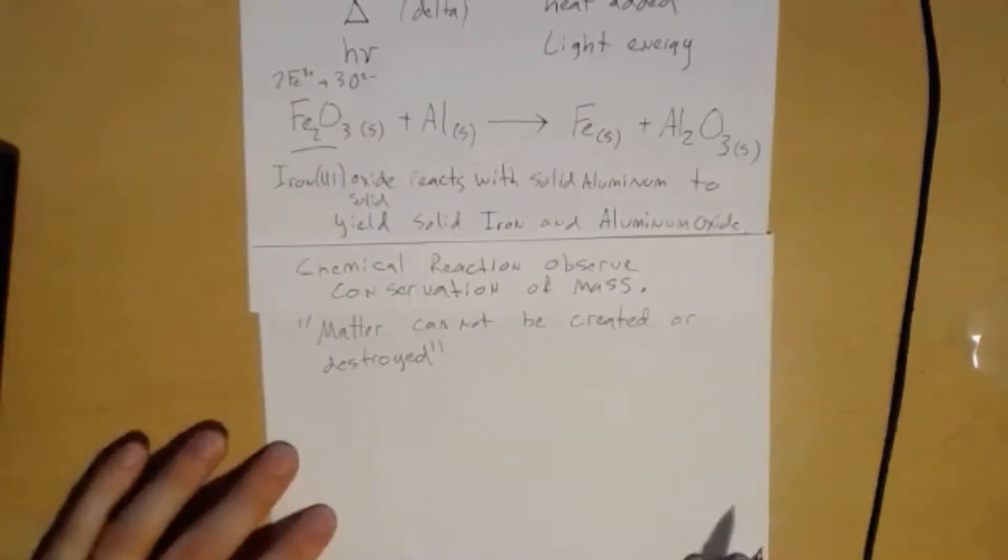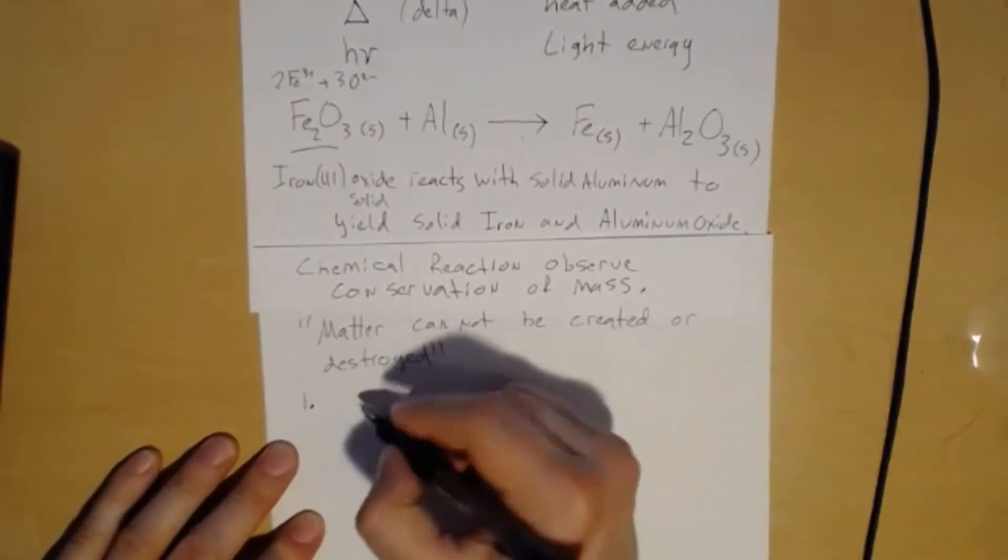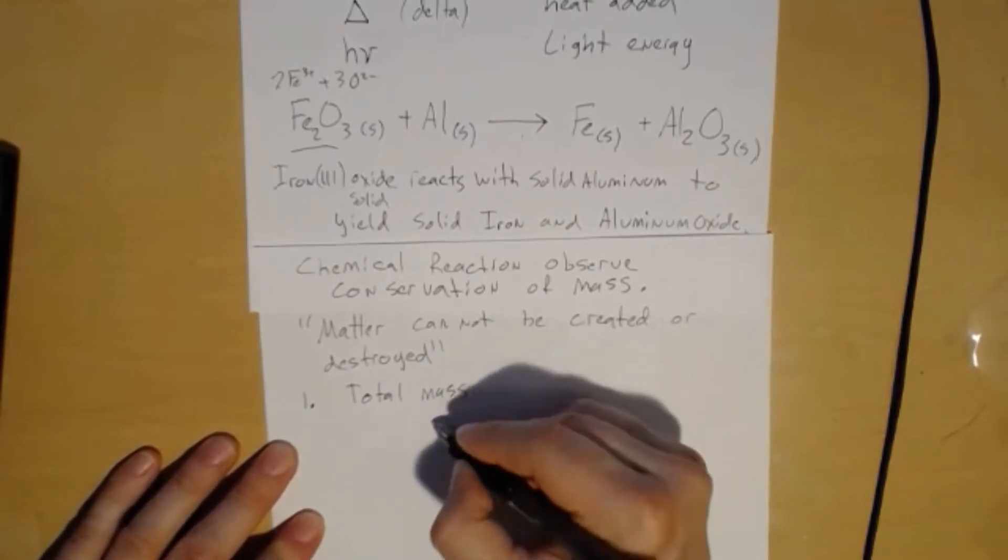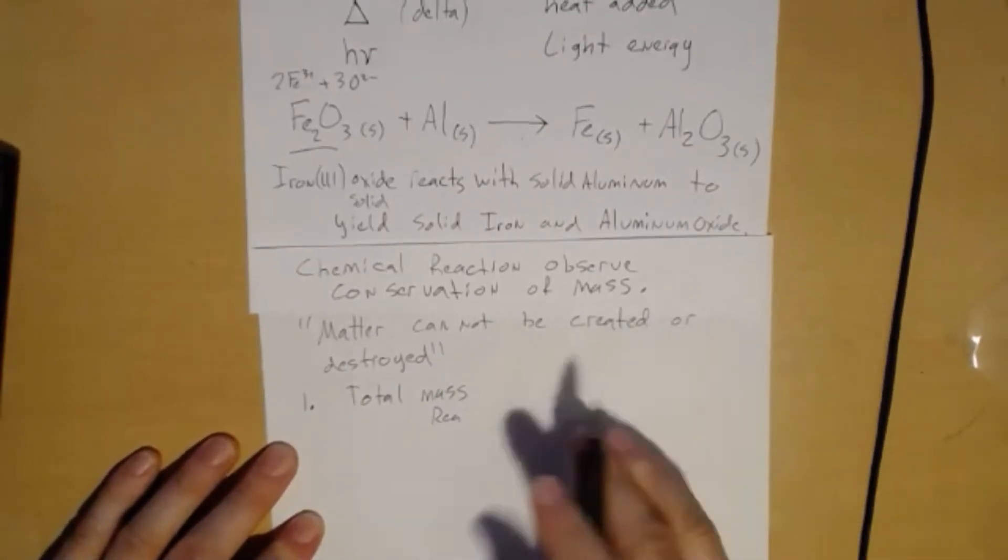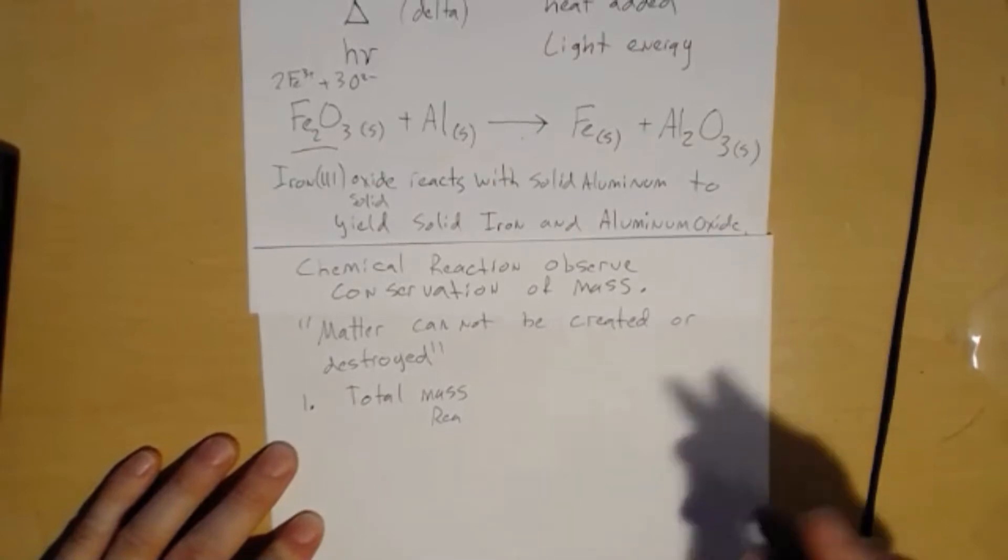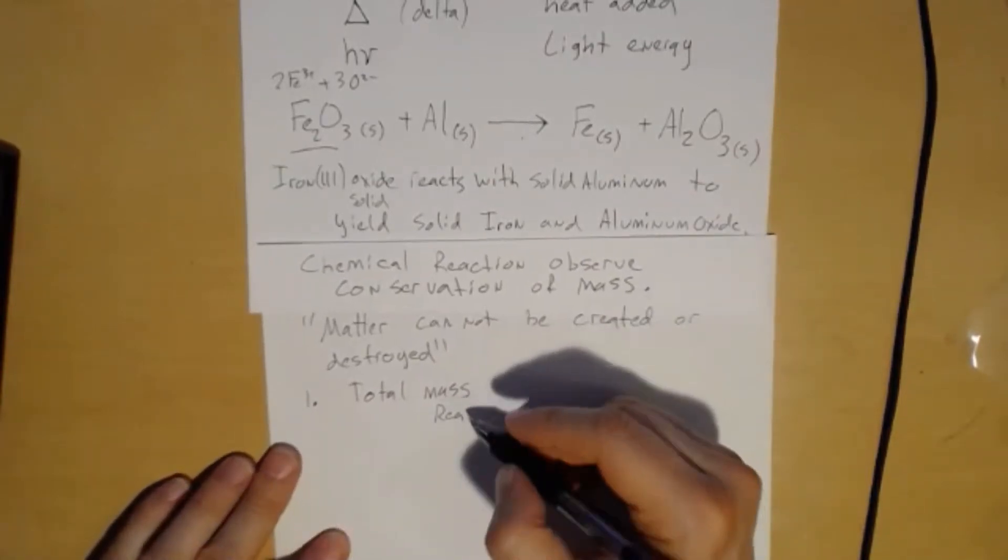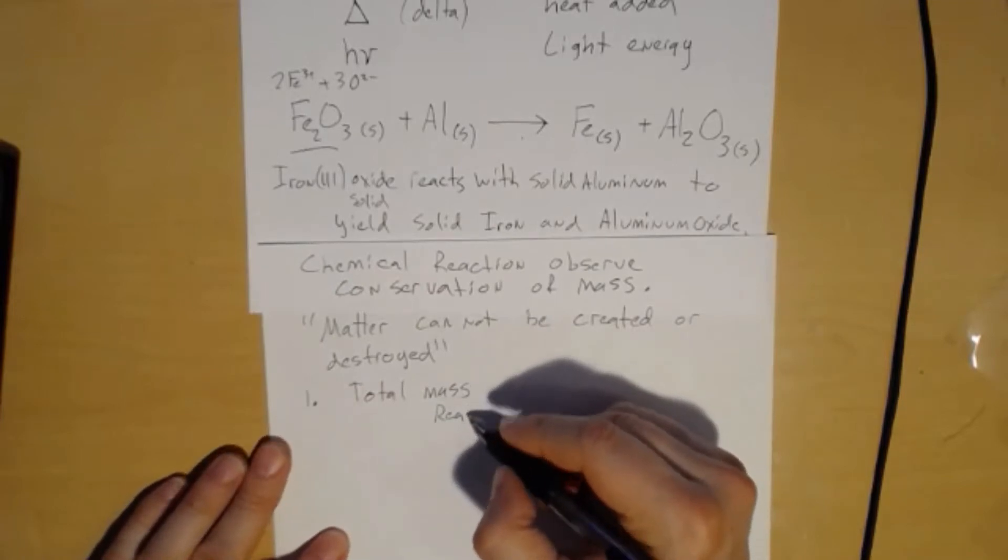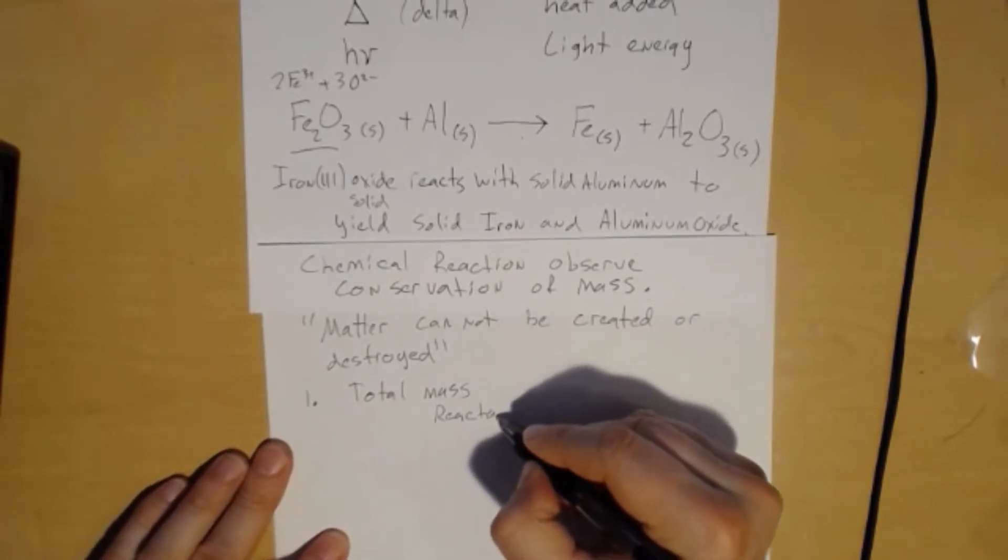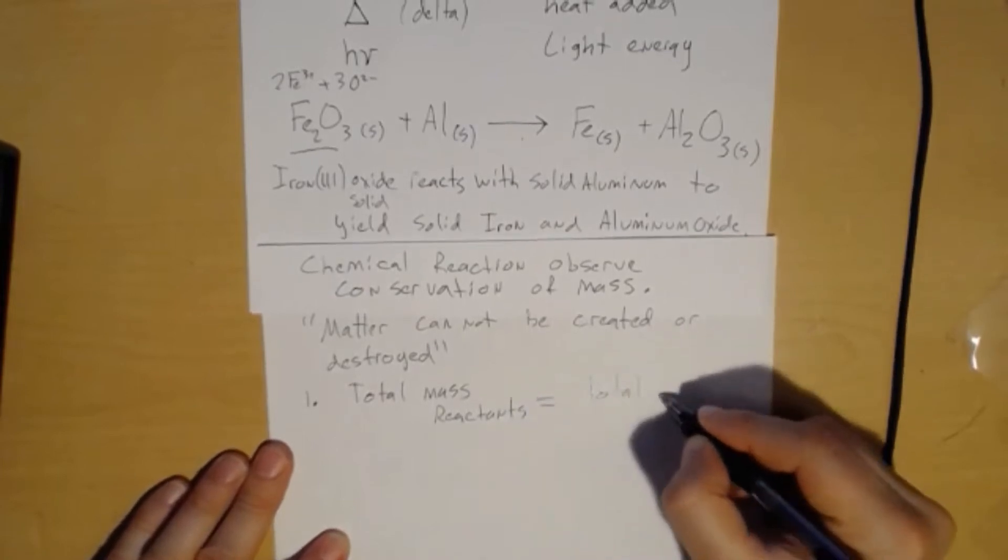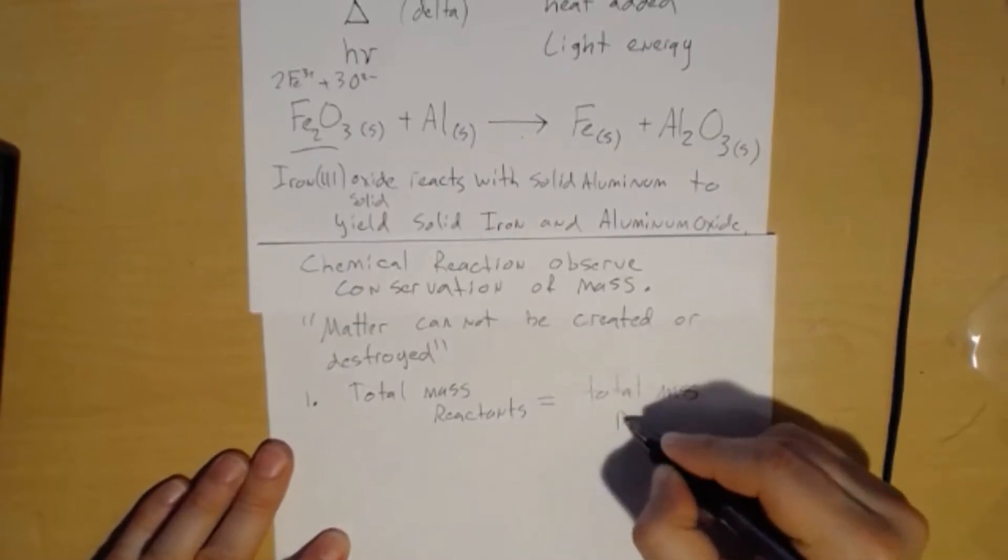The first statement is the total mass of the reactants—if matter can't be created and it can't be destroyed, then the matter that we start with has to equal the matter that we end with. The total mass of reactants equals the total mass of the products.